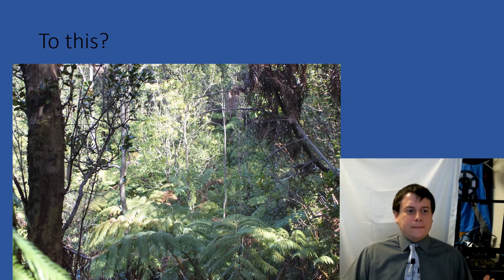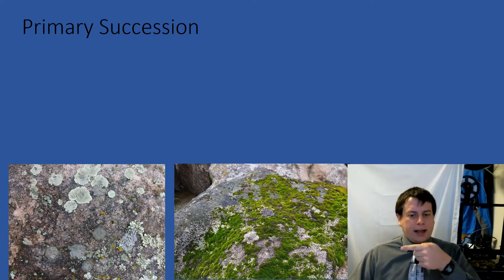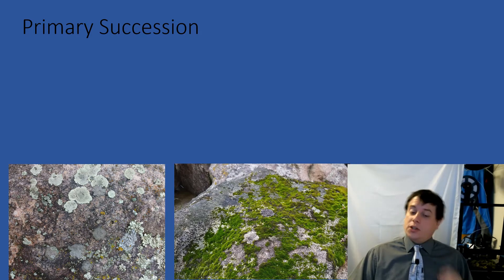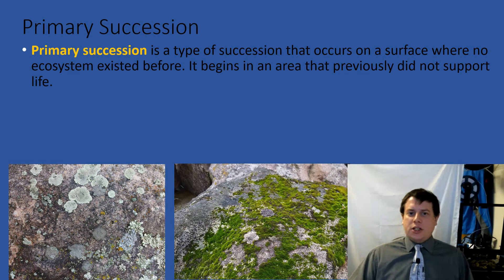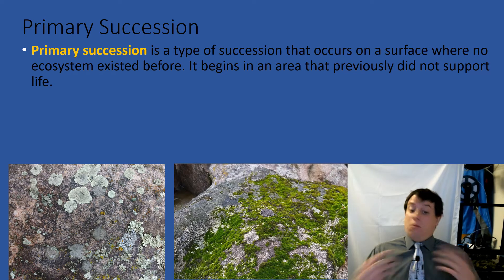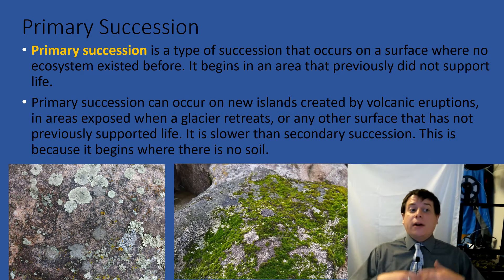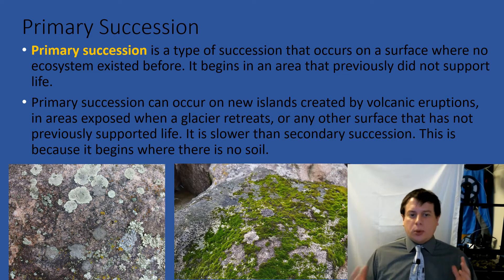It all starts with a process called primary succession. Primary succession is the type of succession that happens when you have no ecosystem that started out beforehand. It begins in an area that previously did not support any life — like new islands created by volcanic eruptions, areas exposed by a glacier retreat, or any other surface that has not previously supported life. This is because there's no soil — all you have are bare rocks.